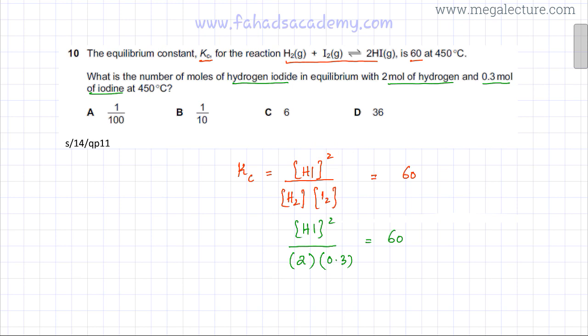For example, to find the concentration, the moles of HI need to be divided by volume. So if I divide all of them by volume, this top one would be volume squared because there's a square on top.